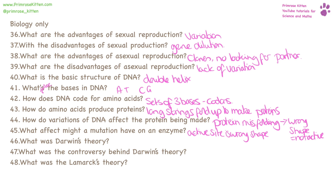Darwin came up with the theory of evolution — gradual changes over time — and this was controversial because it went against religious beliefs. Lamarck's theory was that characteristics developed during a lifetime were passed on to the offspring.